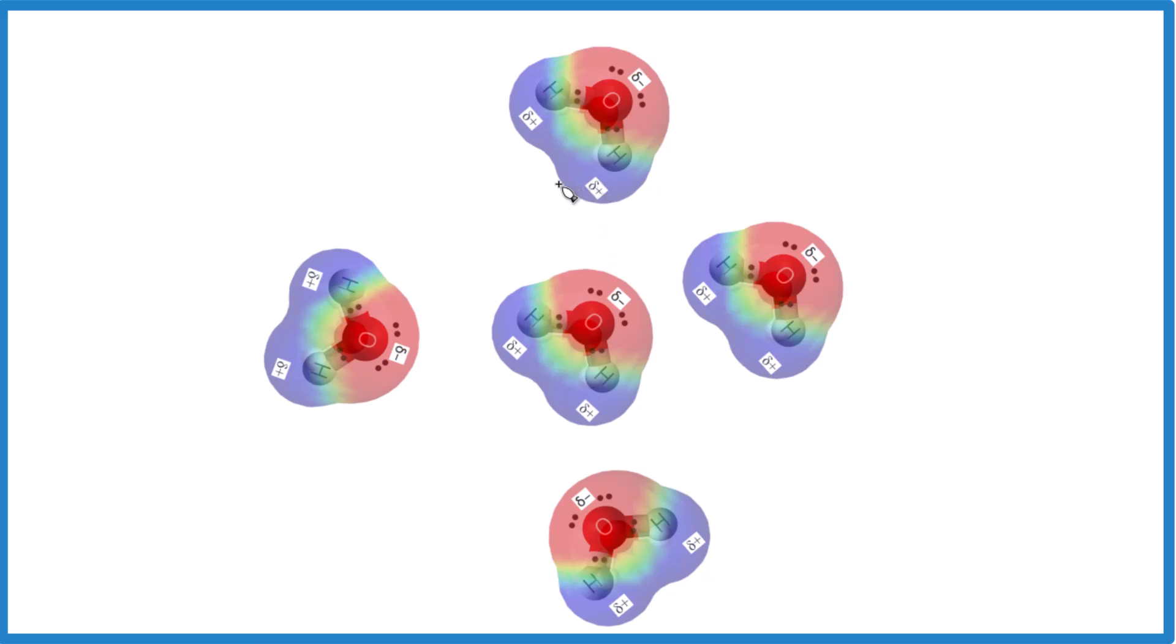So we can form a hydrogen bond between a lone pair right here and a hydrogen atom. So there's one, two, down here, lone pair, hydrogen atom, three, and over here, lone pair, hydrogen atom, four.